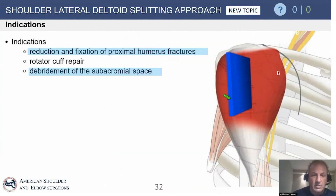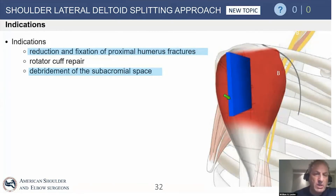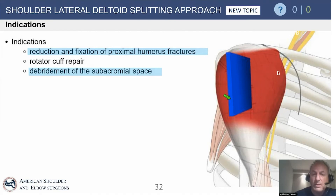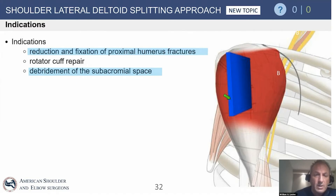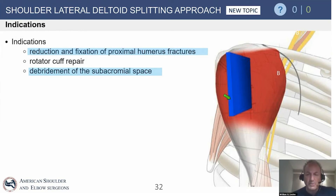The lateral deltoid splitting approach is best for reduction and fixation of greater tuberosity fractures that don't have a concomitant surgical neck component. If you need to address the surgical neck via a lateral approach, it becomes trickier. Trauma surgeons love this approach and like to identify the nerve and make two windows, but most shoulder surgeons prefer the deltopectoral approach if anything needs to be done down the front of the humeral shaft.